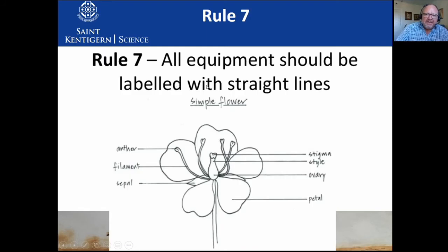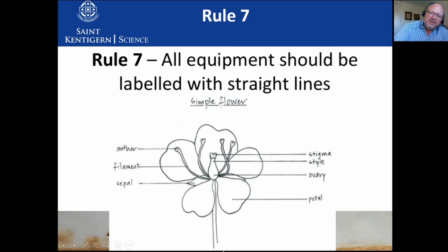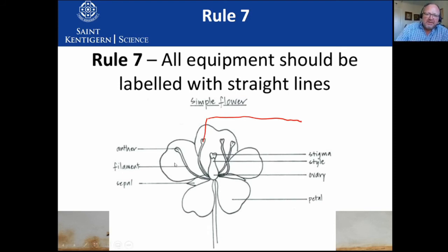All equipment should be labeled with straight lines. You take your ruler — the line has to touch the thing that you're referring to. All the lines should finish at the same place, and none of the lines should cross each other. If you have to label something and can't reach it, you can use the other side, or sometimes go up first and then to the side. Label lines should never cross, and the label line must touch the item being labeled.